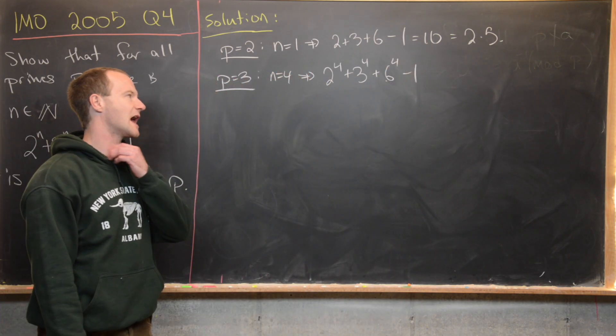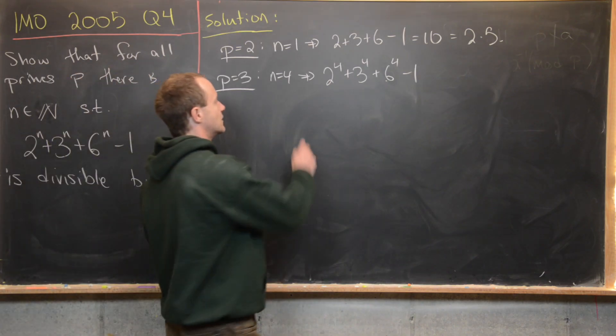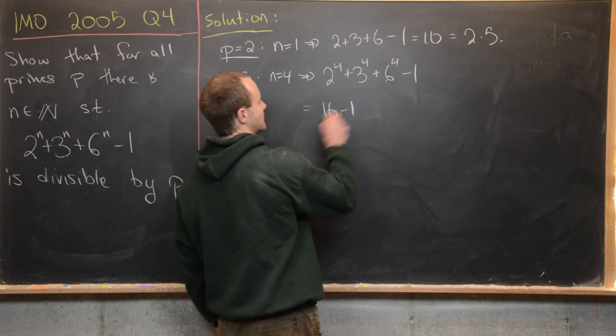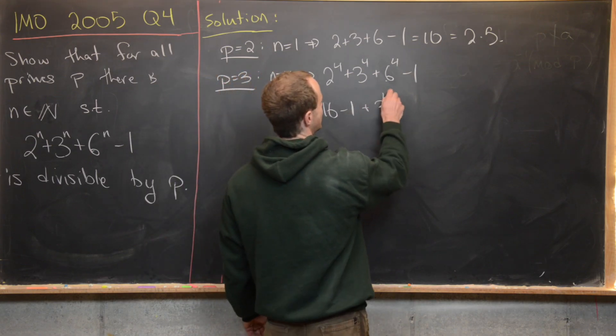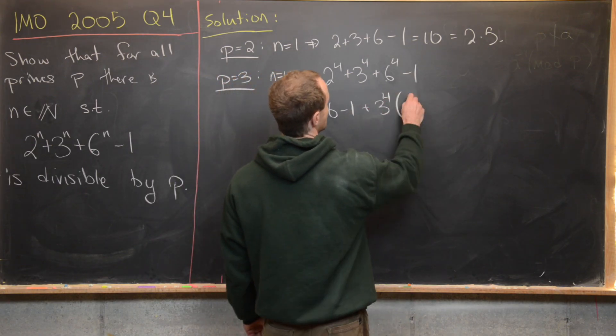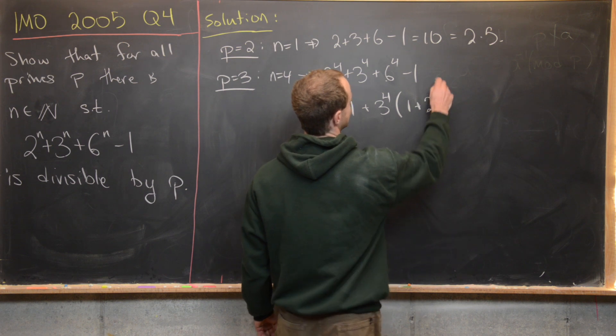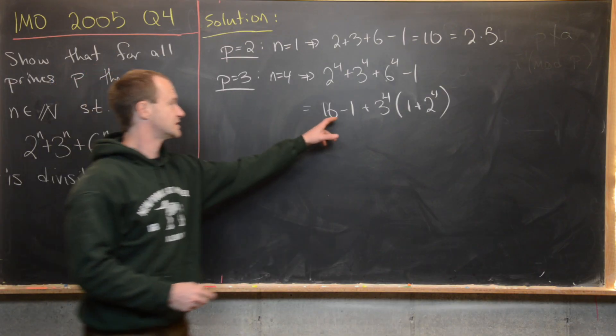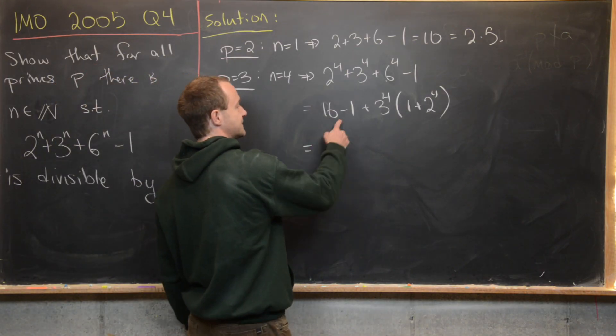Now we could multiply all that out, but we don't really need to. Notice that this is equal to 16—2^4 is 16—minus 1 plus 3^4 times (1 + 2^4). I just factored a 3^4 out of each of those terms. So check it out, that's going to be equal to 15.